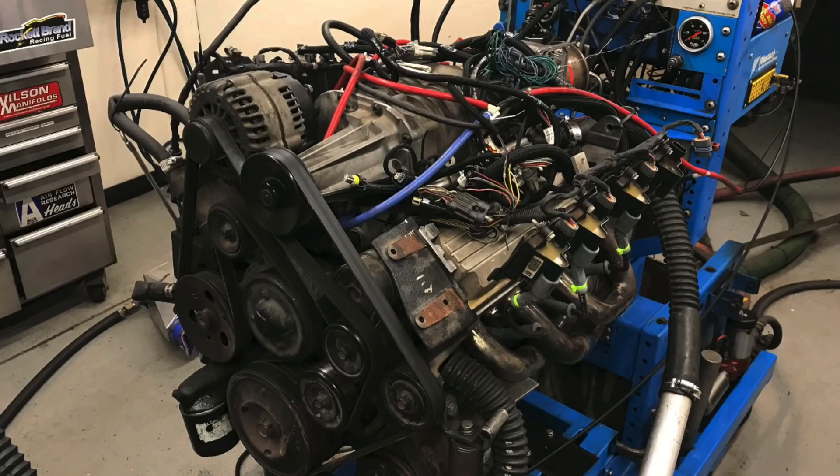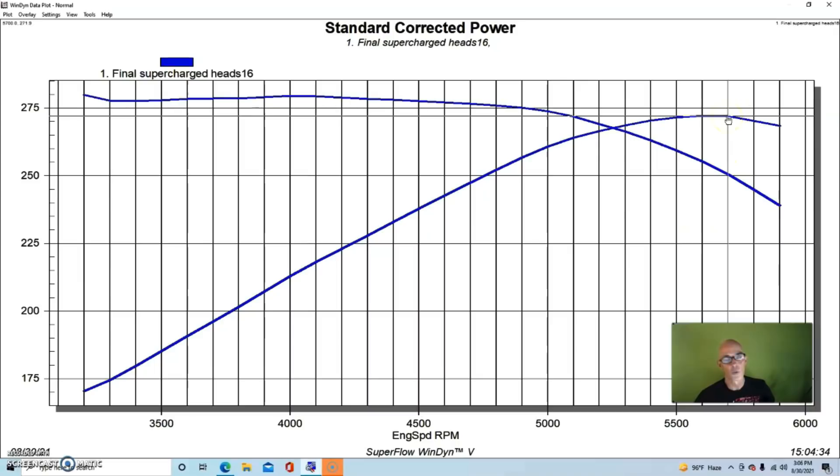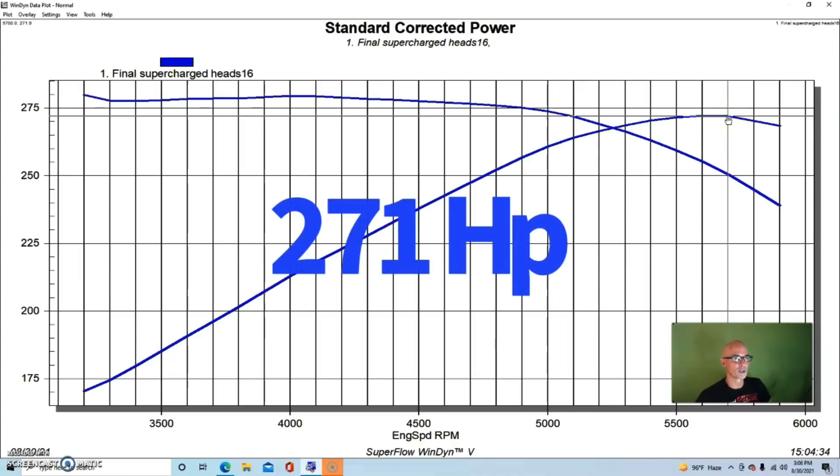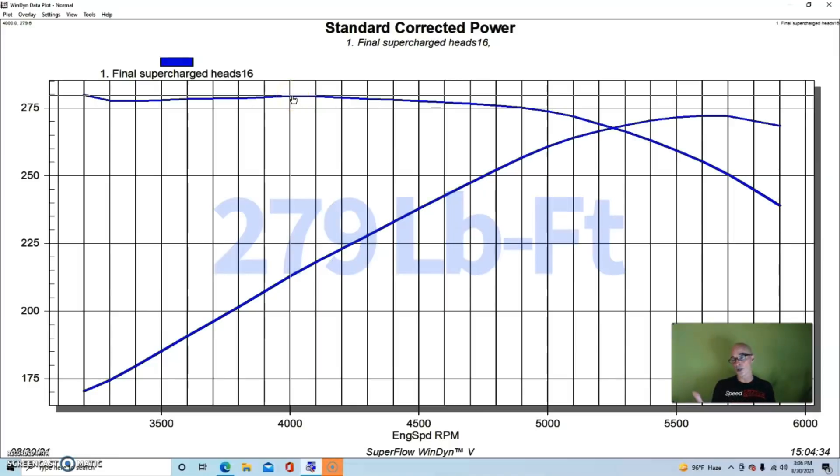Now it's time. This motor is back in stock trim, meaning stock blower, stock pulley, stock throttle body, no air intake, stock exhaust, and we ran this thing on 91 octane pump gas to start out with. Here's what we got running our junkyard motor with rebuilt heads: 271.9 horsepower and peak torque is 279.6. So 271 horsepower, 279 foot-pounds of torque on pump gas.